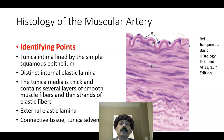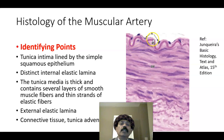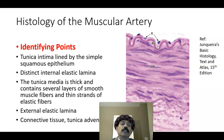This internal elastic lamina is very distinct in a muscular artery. Muscular arteries are also called medium-sized arteries or distributing arteries, and they are the most numerous arteries. The endothelial cells are composed of simple squamous epithelium, and the subendothelial connective tissue is thinner and less distinct compared to that of the elastic artery.